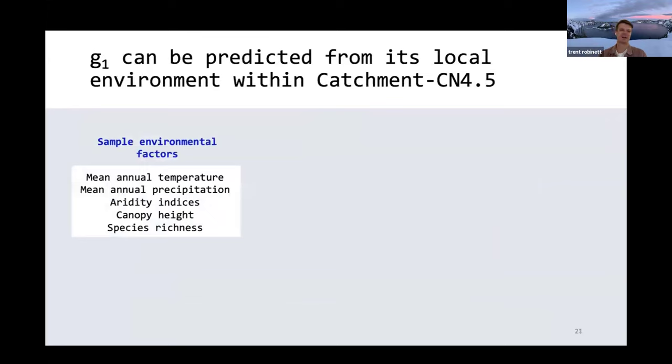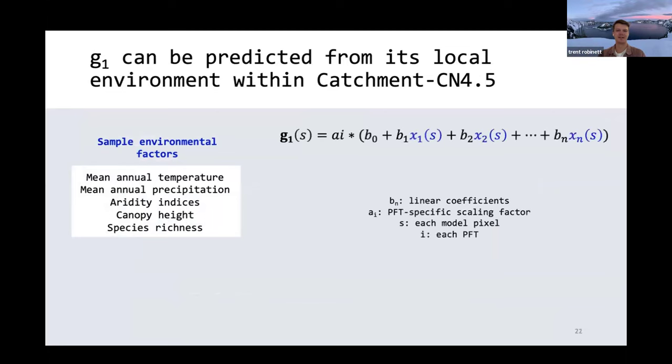So we wanted to ask, can a strategy such as this be implemented in a fully operational land surface model like the types of models we've been talking about in this workshop, such as for my case, Catchment-CN4.5? To actually implement this strategy, we took some sample environmental factors such as mean annual precipitation, and we simply fit a linear equation to predict our parameter of interest here, the parameter g1, as a function of these sample environmental predictors. These x(s) values in our linear equation, and then we can fit these b coefficients and this ai overall scaling factor that will be PFT specific to predict g1.